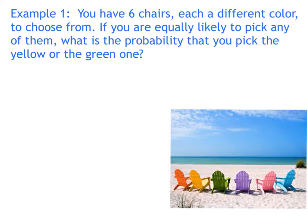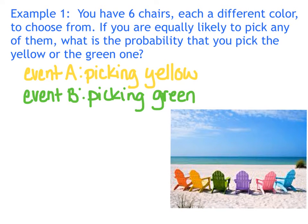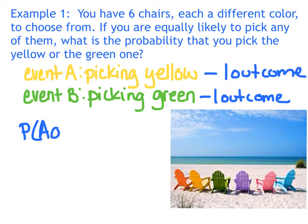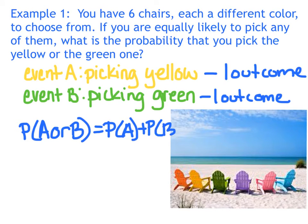Alright, so in the spirit of summer, you have six beach chairs, each a different color to choose from. If you are equally likely to pick any of them, what is the probability that you pick the yellow or the green one? So we'll let event A be choosing a yellow one, and we'll let event B be picking a green one. Now, event A has only one outcome. There's only one yellow chair. Event B only has one outcome because there's only one green chair. They have no outcomes in common. There is no chair that is yellow and green.